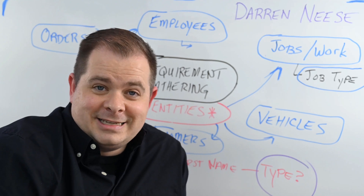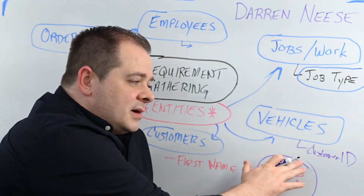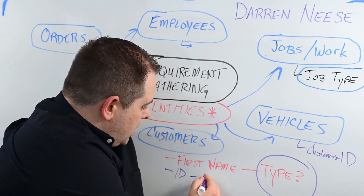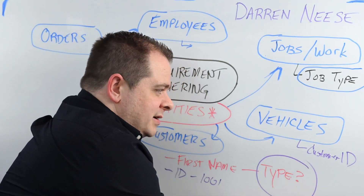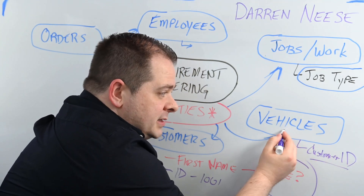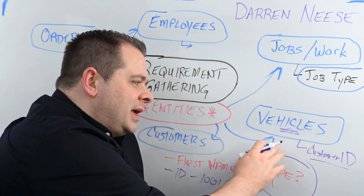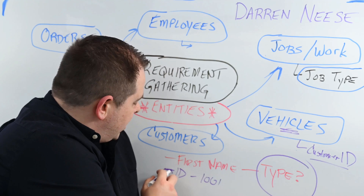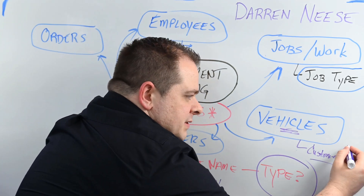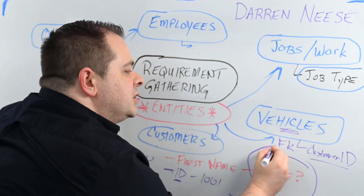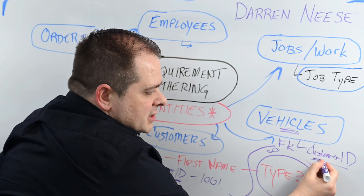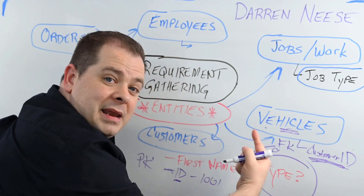There are relationships between these entities. For example, a vehicle will have a column like customer ID. Over in the customer entity, we probably have an ID which is an auto number—so their ID might be 1001, and over in vehicles there's a customer ID of 1001, so you know that vehicle belongs to that customer. That's called a foreign key. When you have a foreign key, the primary key in the customer table—often noted PK—and the foreign key in the other table—noted FK—indicate a relationship. It's a one-to-many relationship: one customer can have multiple vehicles.